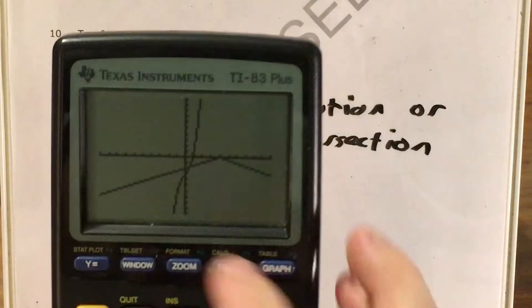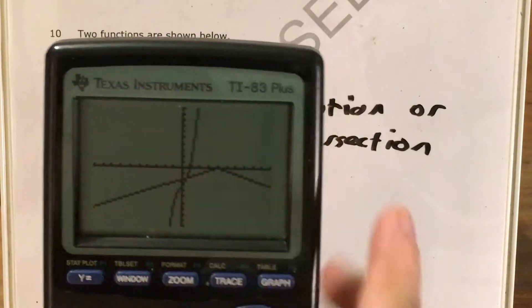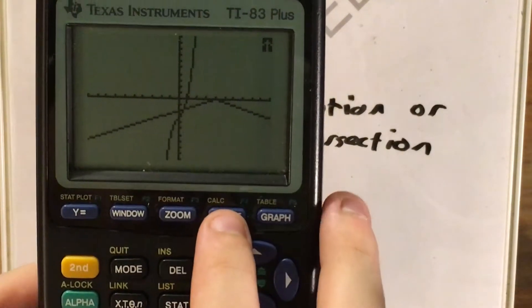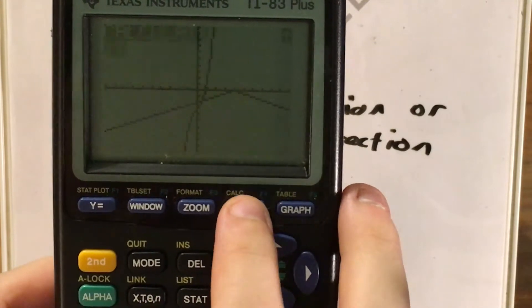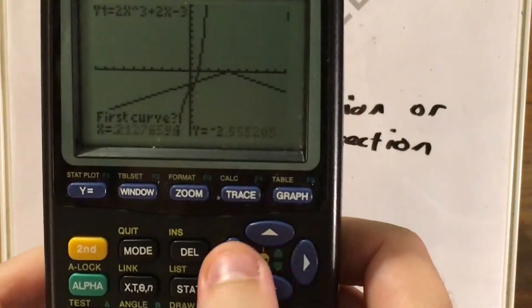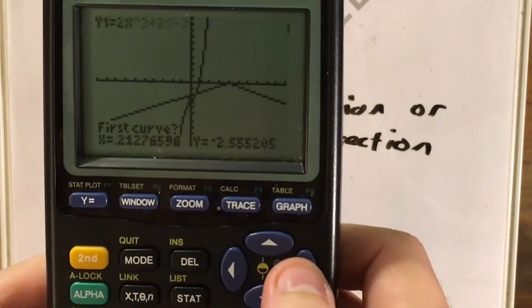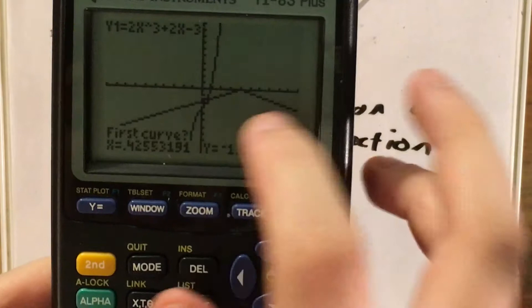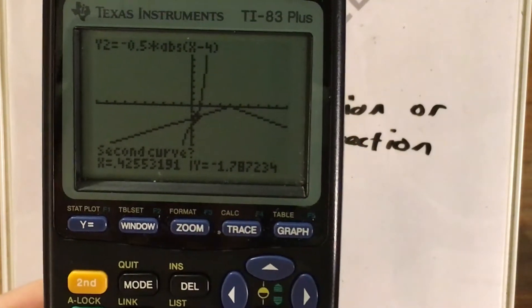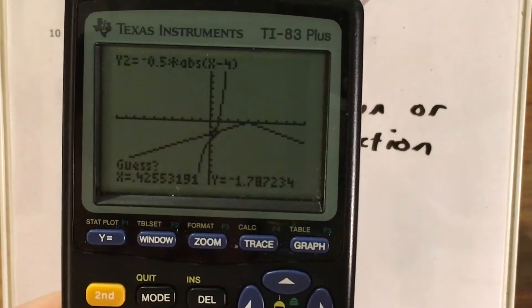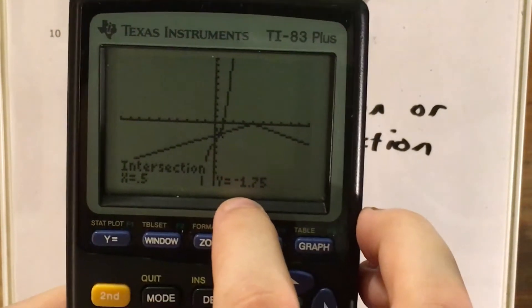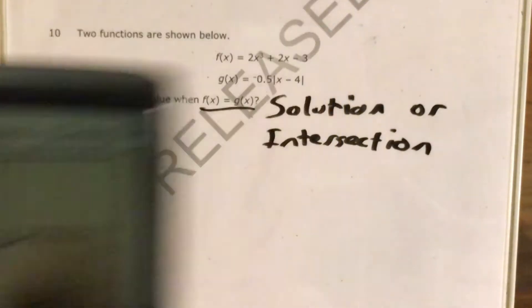Alright, now, I can see that these intersect at only one point, so I'm going to go ahead and press second, and then the word calc is written above trace in yellow writing, so this will be the calculate menu, I go down to intersect, and now I can only move left or right, but I'm going to move my cursor right until it's very close to that intersection. So once it's there, I press enter for first curve, enter for second curve, enter for guess, and here's my y value, negative 1.75.